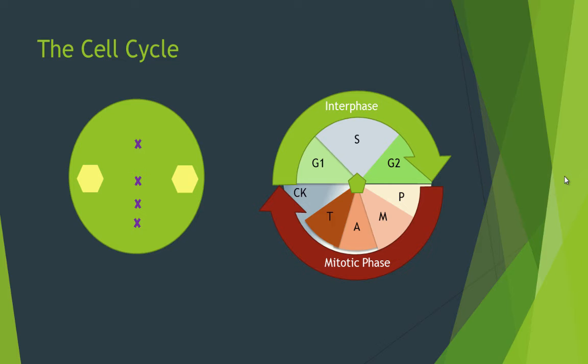During anaphase, the daughter chromatids of the chromosomes are pulled apart and now called chromosomes themselves. The chromosomes are pulled towards opposite ends of the cell.